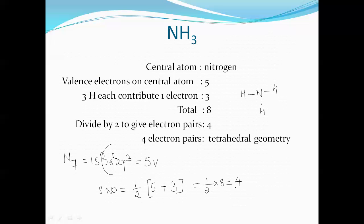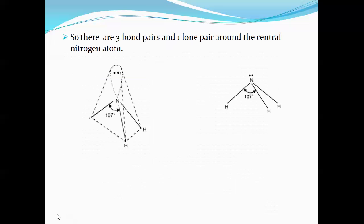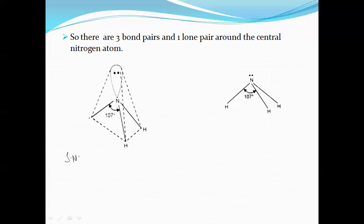The steric number is 4, meaning there are 4 orbitals around the central nitrogen atom. But there are 3 bond pairs — attached to 3 hydrogen atoms — and 1 lone pair on the nitrogen. Of the 5 valence electrons, 3 are involved in bonding and the remaining 2 form one lone pair on the central nitrogen atom. So the geometry of the molecule is again tetrahedral.